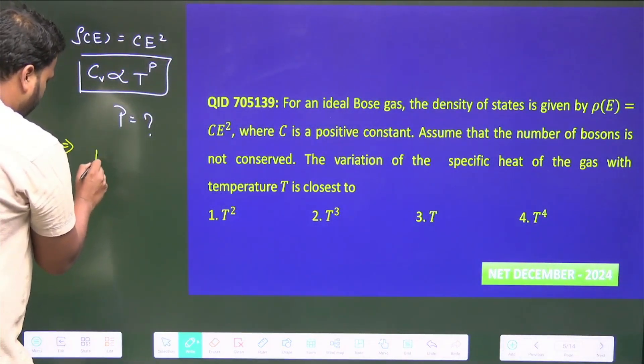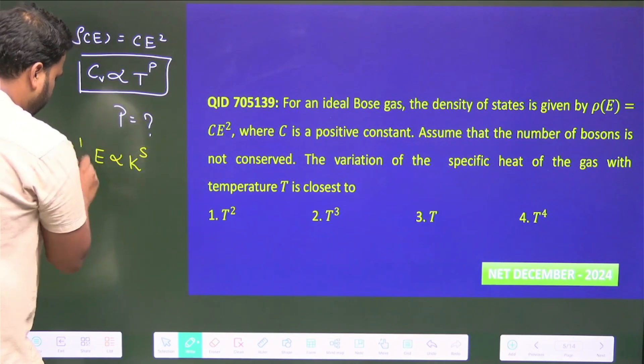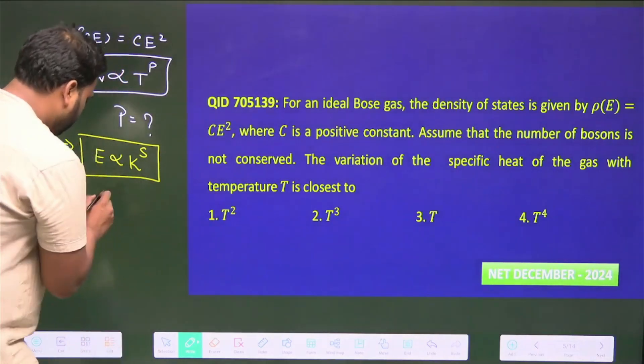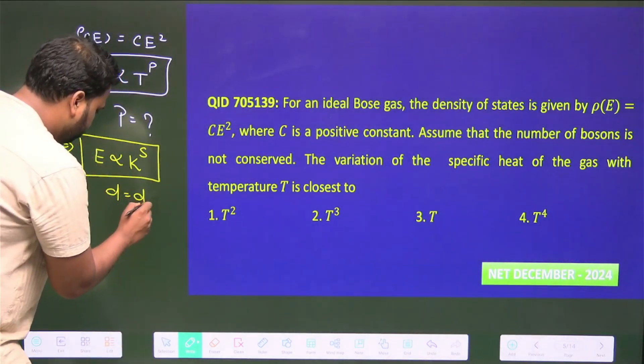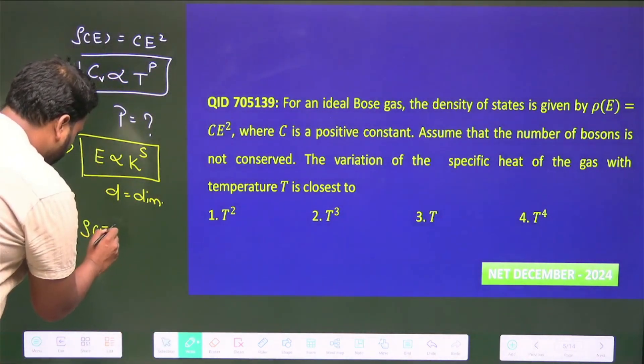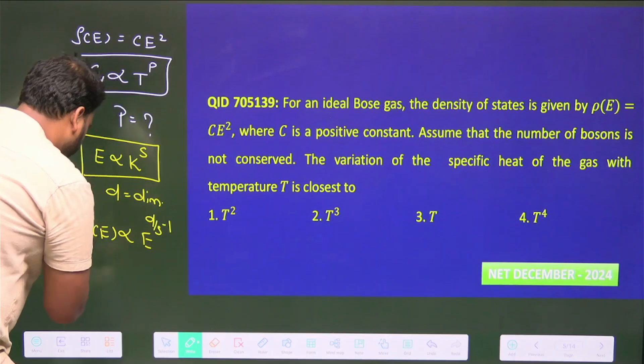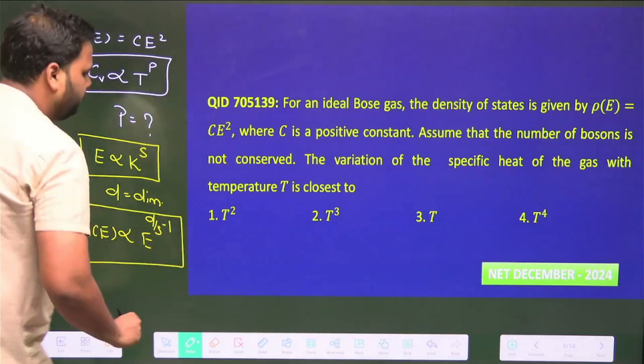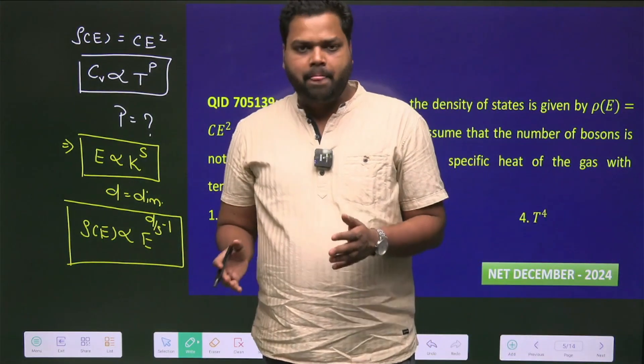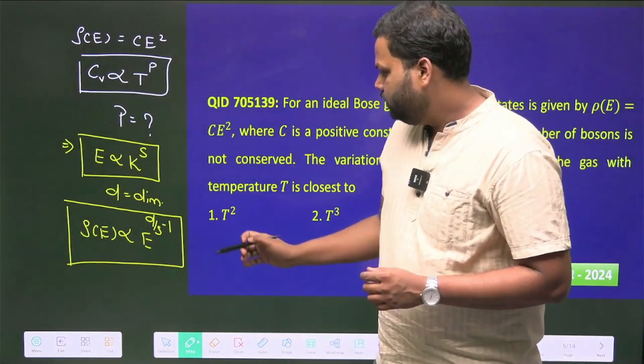If the dispersion relation is E proportional to K to the power S, and D is the dimension, then the density of states is proportional to E to the power (D/S - 1). We solved this in class in the form of complete derivation, but here I will tell you how to solve this directly.